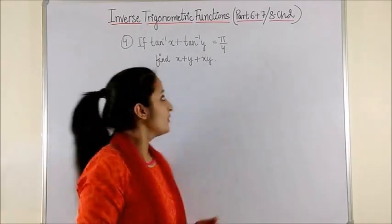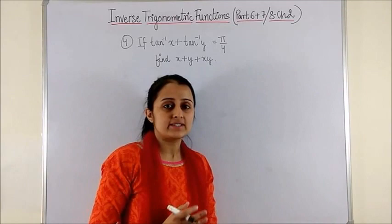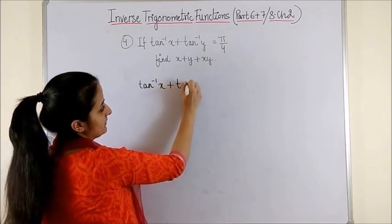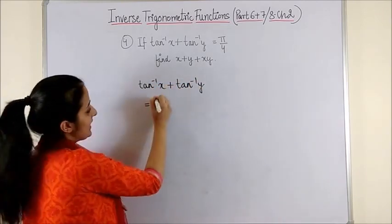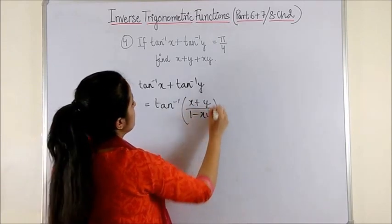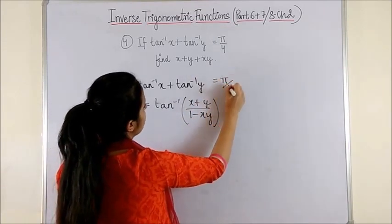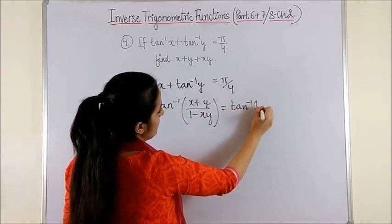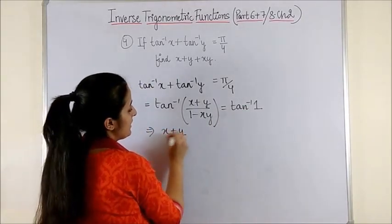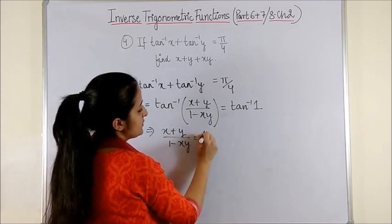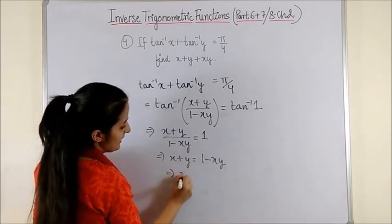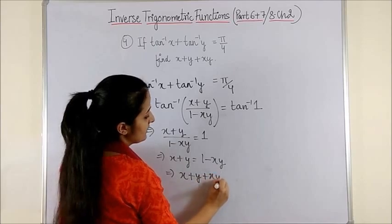Have a look at question 4. This is one of the properties we discussed in the previous video. If I consider tan⁻¹x + tan⁻¹y and express it as tan⁻¹[(x + y)/(1 − xy)], this is already given to be equal to π/4, which could be written as tan⁻¹(1). Once we take tan on both sides, we get (x + y)/(1 − xy) = 1, and on cross multiplying you get x + y + xy = 1.